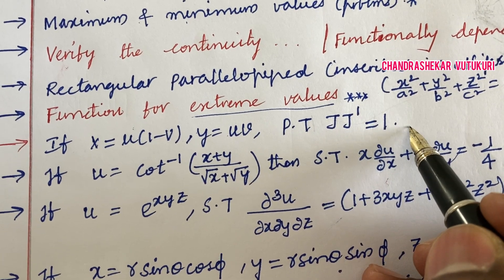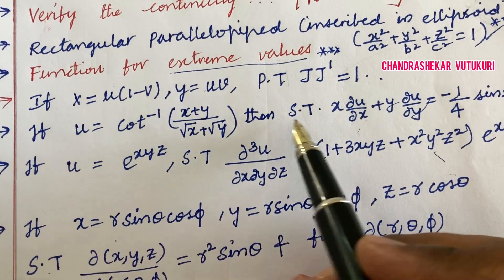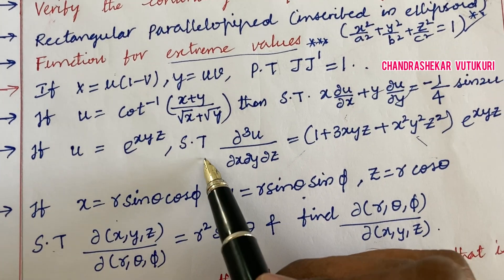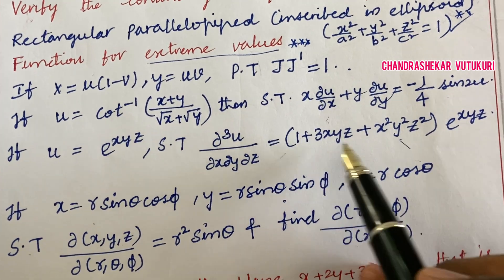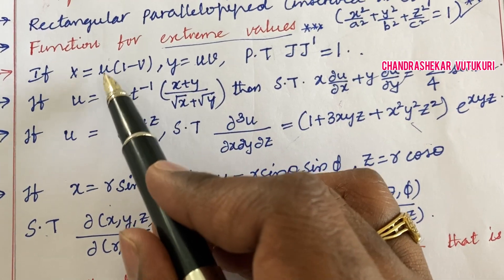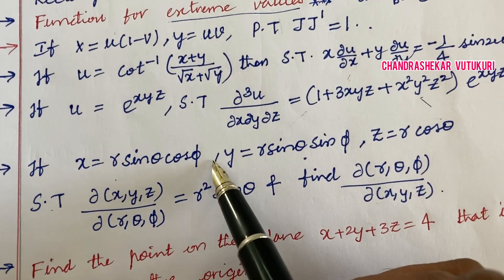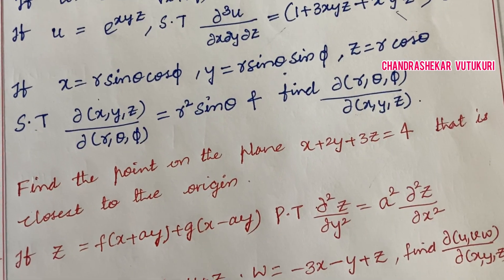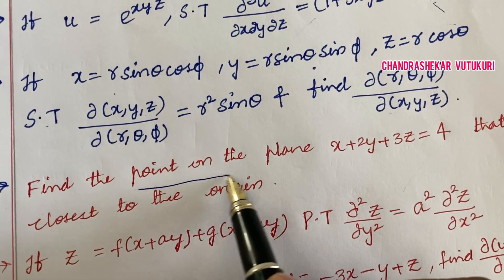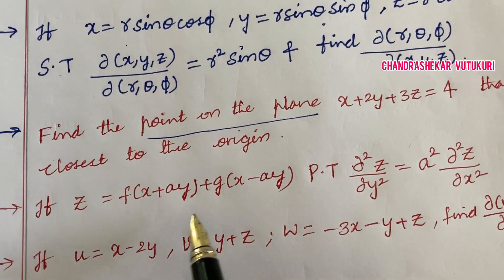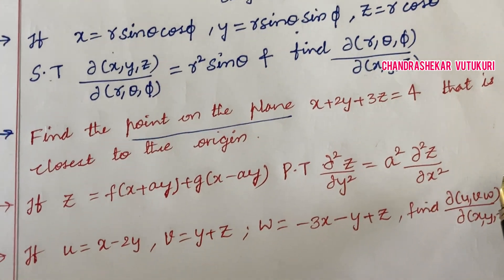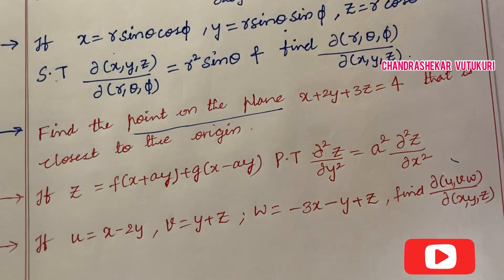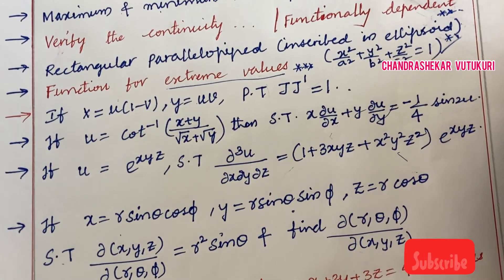If x equals to this, prove that J J inverse is nothing but 1. If u equals to this, then show that you are supposed to work out partial differentiation and equate to this. Do not concentrate only on these numerical values and symbols—work out problems in this view. If x equals this, y equals this, z equals this, show that and find doh with respect to r, theta, phi with respect to x, y, z. Find the point on the plane. If z equals this statement, prove that this equals this. If u equals, v equals, w equals, find doh of u, v, w respective x, y, z.